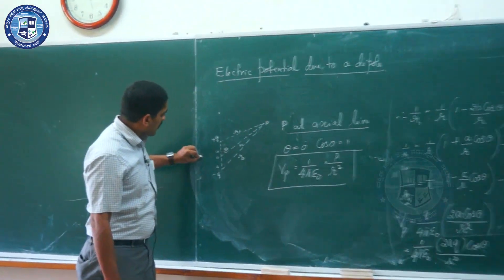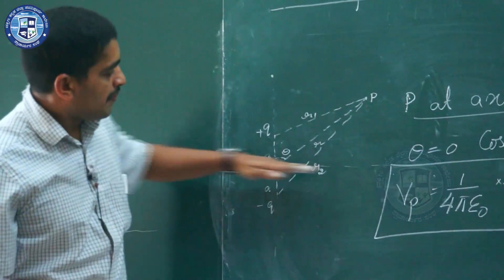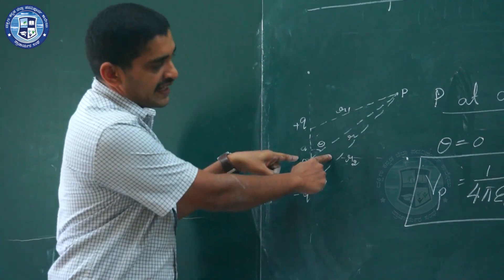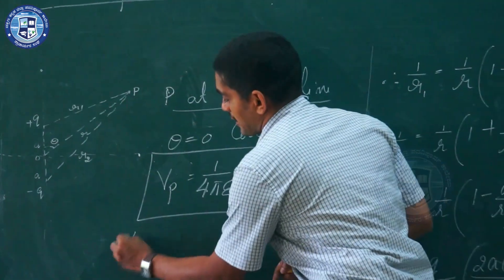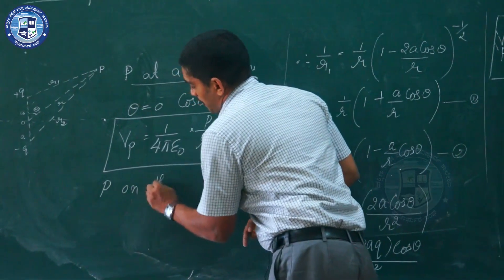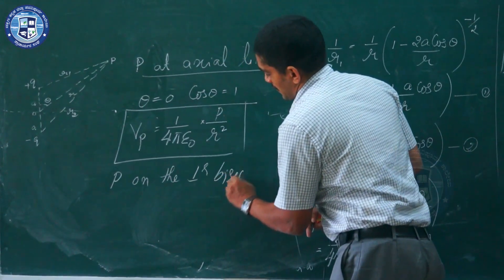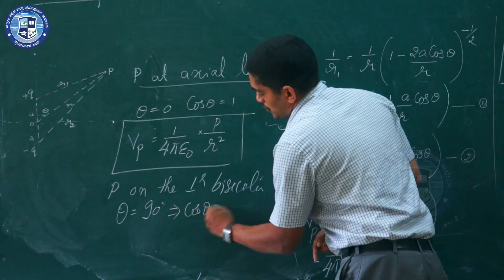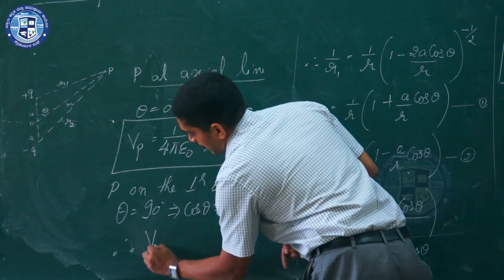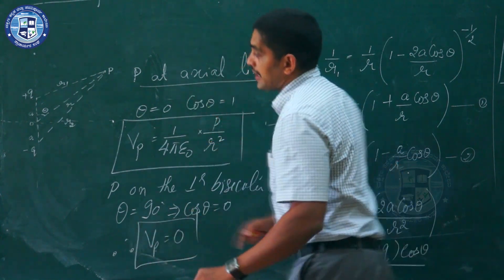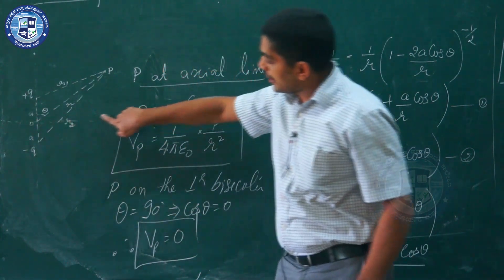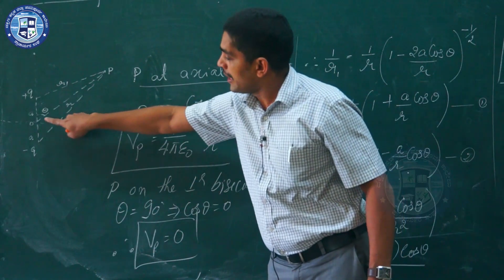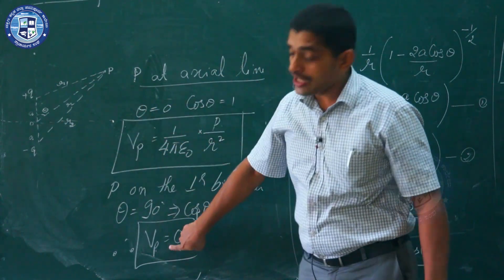Similarly, for a point along the equatorial or perpendicular bisector, the angle theta equals 90°. This means cos θ = 0, and therefore the potential VP = 0. So, anywhere along the perpendicular bisector, the electric potential due to the dipole is zero.